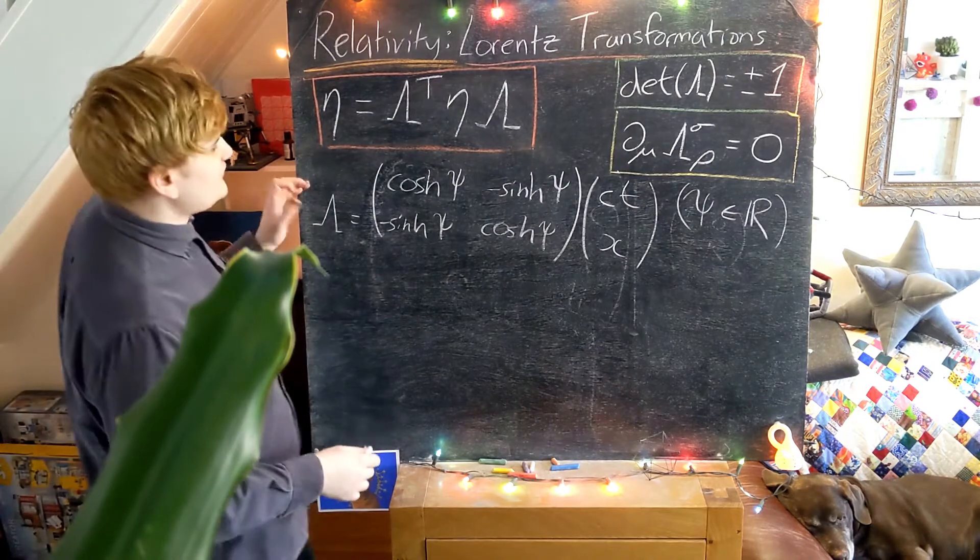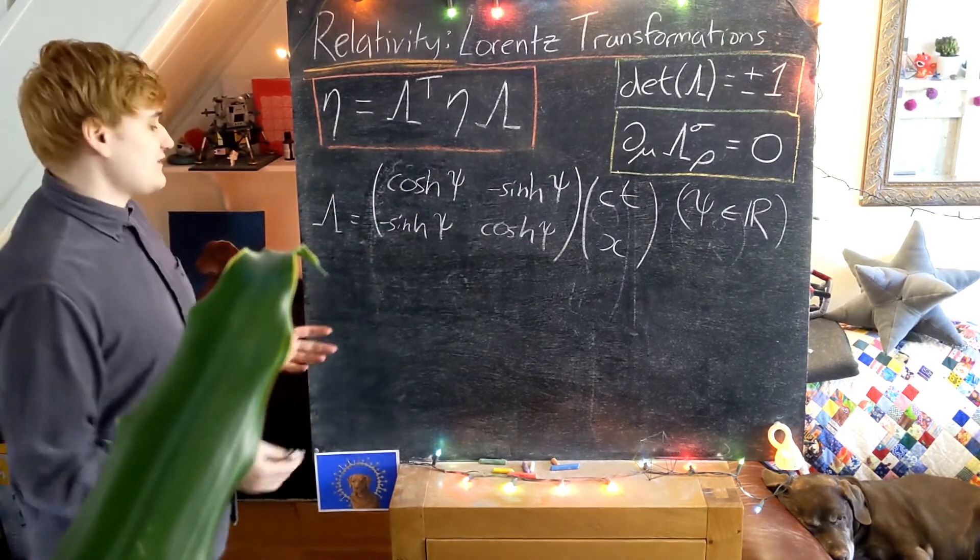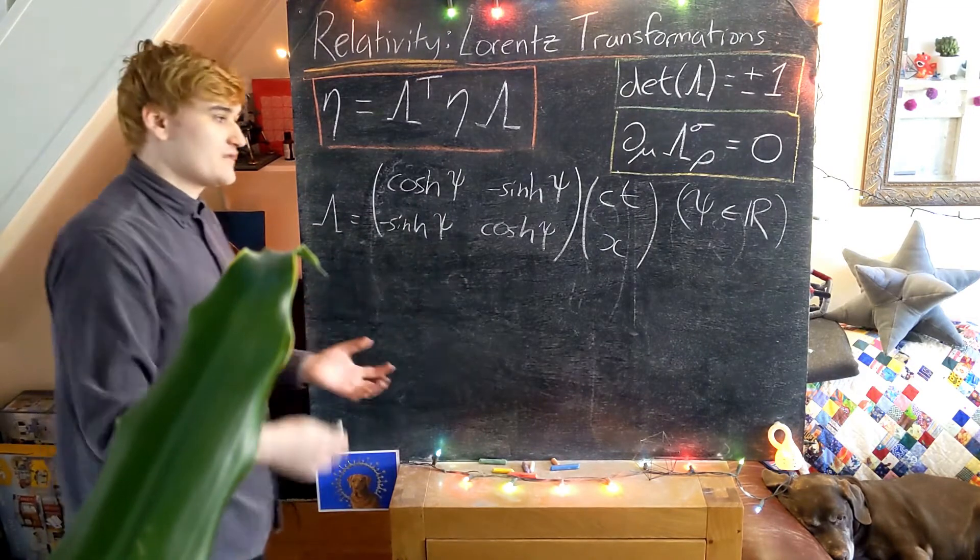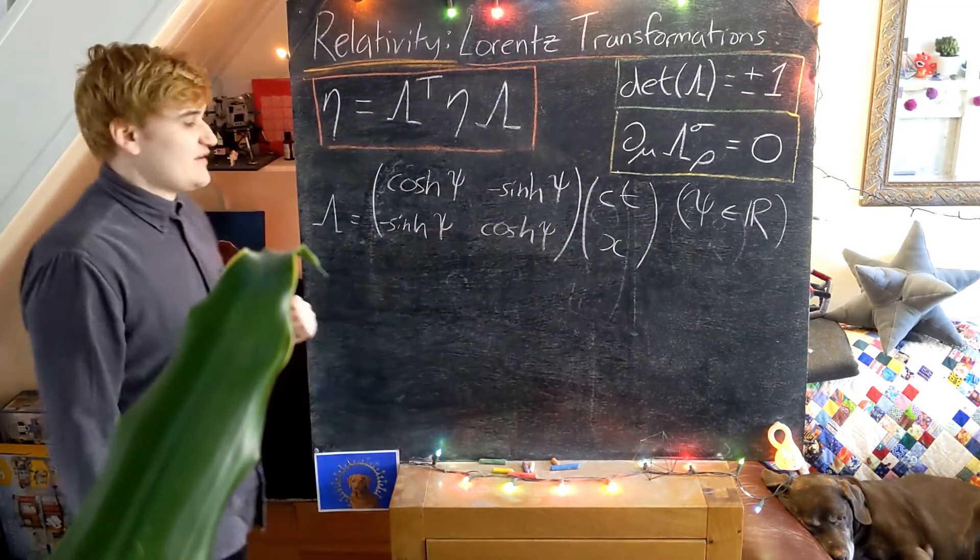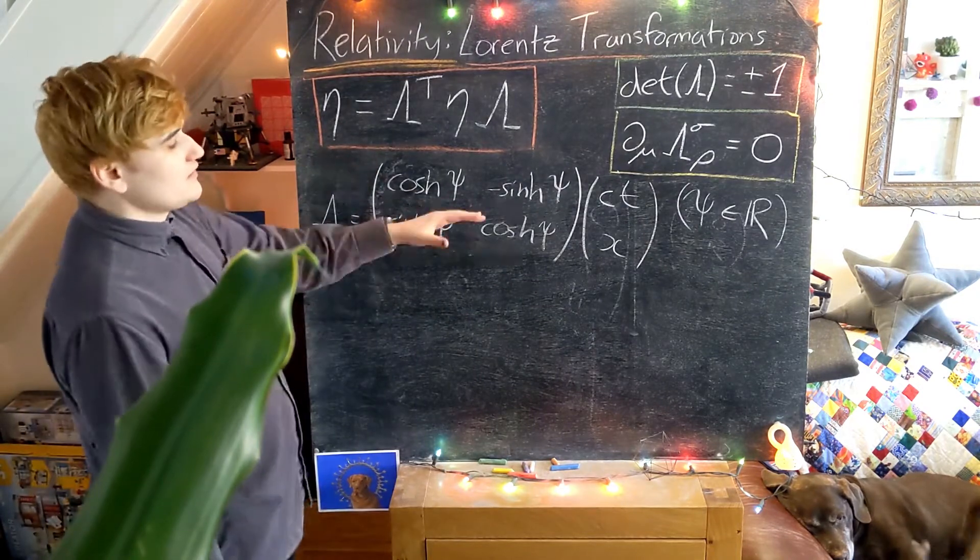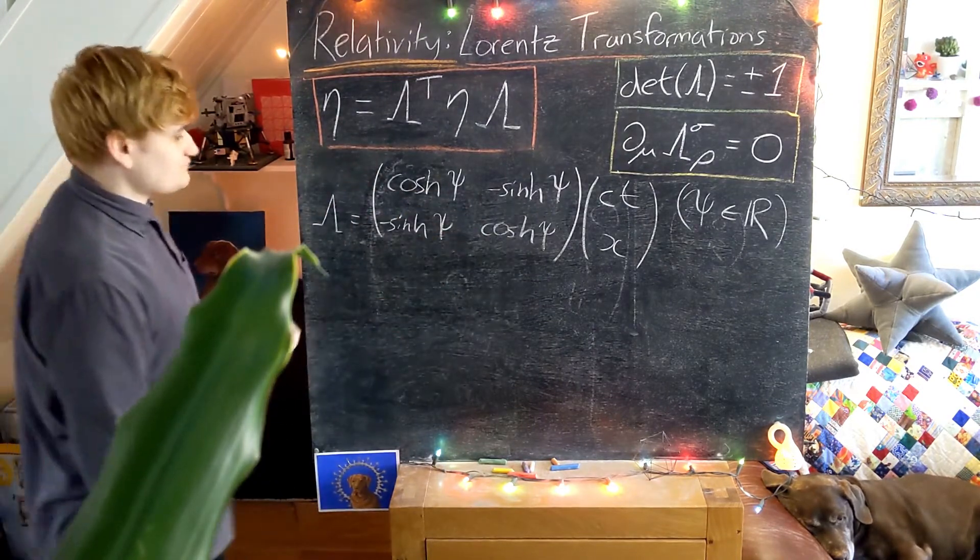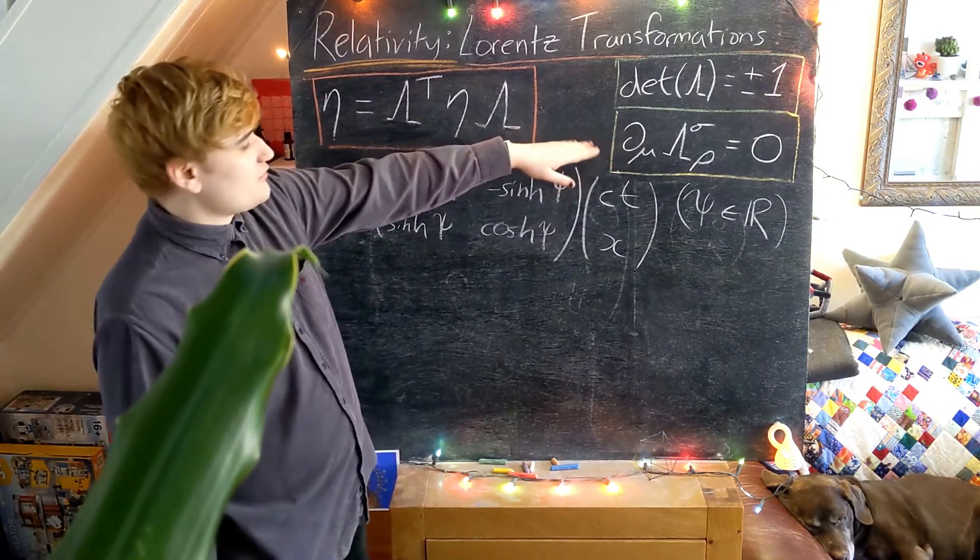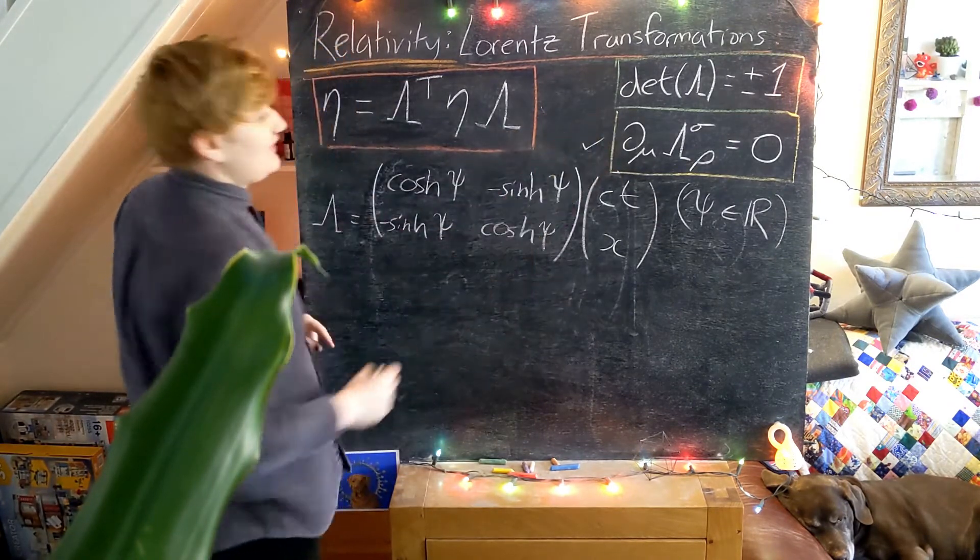So I'm just going to quickly tell you that psi is just some real parameter. We're not going to have a physical interpretation for it yet. But it is going to be, like theta was a rotation angle, psi is going to kind of be a rotation angle. It's actually going to be a hyperbolic angle. But for now it's just a parameter. So our matrix doesn't depend on the coordinates, so we have a linear transformation.